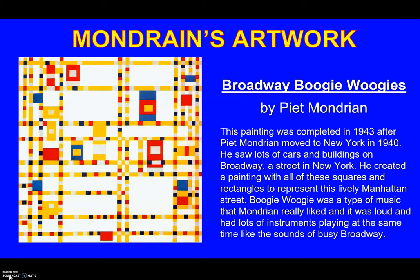Broadway Boogie Woogie by Piet Mondrian. The painting was completed in 1943 after Piet Mondrian moved to New York in 1940. He saw lots of cars and buildings on Broadway, a street in New York. He created a painting with all of these squares and rectangles to represent this lively Manhattan street. Broadway Boogie Woogie was a type of music that Mondrian really liked — it was loud and had lots of instruments playing at the same time, like the sounds of busy Broadway.